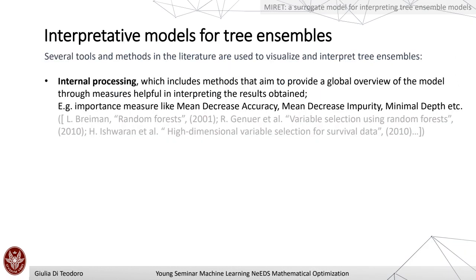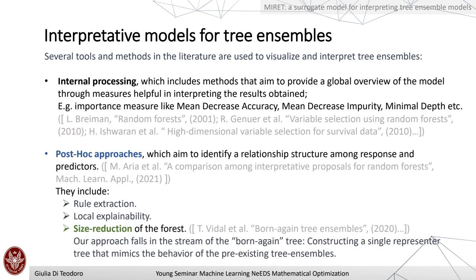About tree ensembles: several tools and methods in the literature have been developed for interpreting tree ensemble models, such as internal processing methods that aim to provide a global overview of the model — like mean decrease accuracy or mean decrease impurity. Then there are post-hoc approaches that aim to identify relationship structures among responses and predictors, including rule extraction, local explainability, and size reduction of the forest. Our approach falls in this last stream, particularly in the stream of the born-again tree.